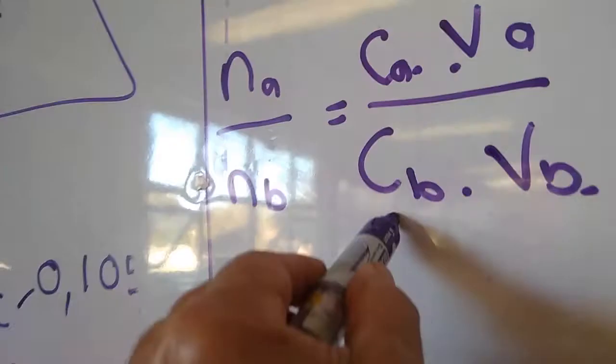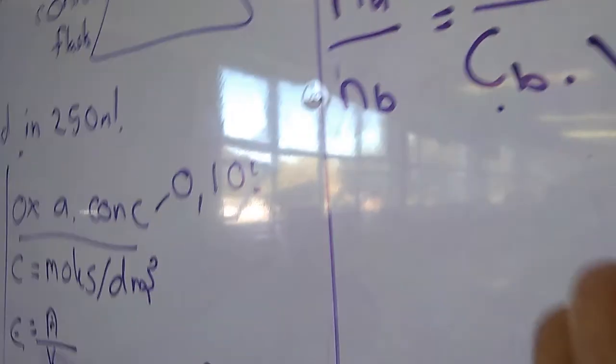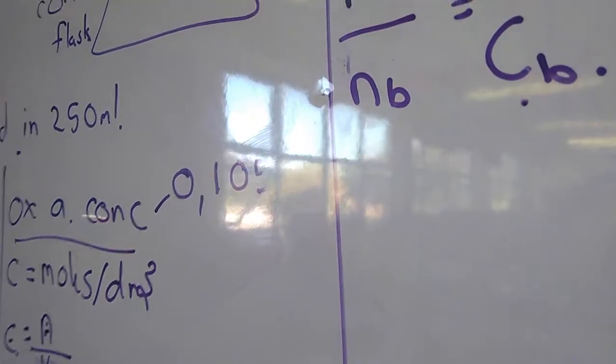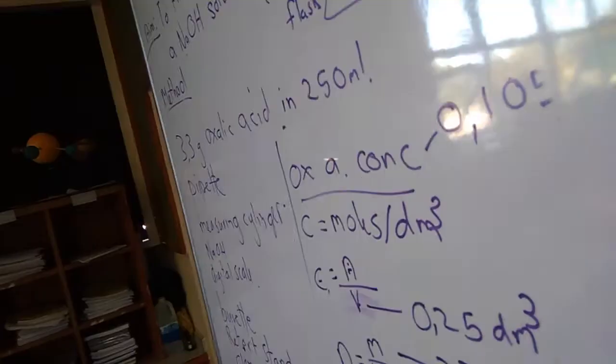That's the one we don't know, right? Yes. So that's the unknown. Do you know the concentration of the acid? Yes. You worked it out. What was it? 0.105.